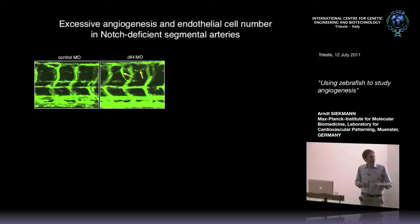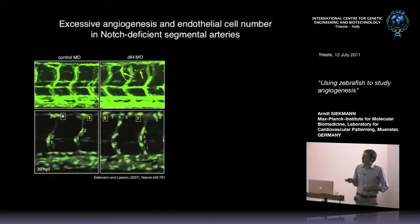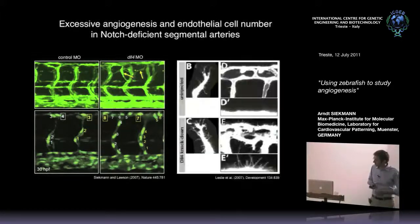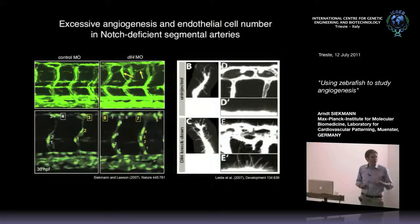In contrast to VEGF receptor mutants, mutants for the Notch signaling pathway show the exact opposite phenotype. VEGF mutants had no sprouting, but Notch pathway mutants show too much angiogenesis. This excess angiogenesis is accompanied by a drastic increase in endothelial cell numbers in these intersomitic sprouts - instead of three or four cells, you have twice as many sprouts. The angiogenic behavior characterized by filopodial extensions is also increased without proper Notch signaling.